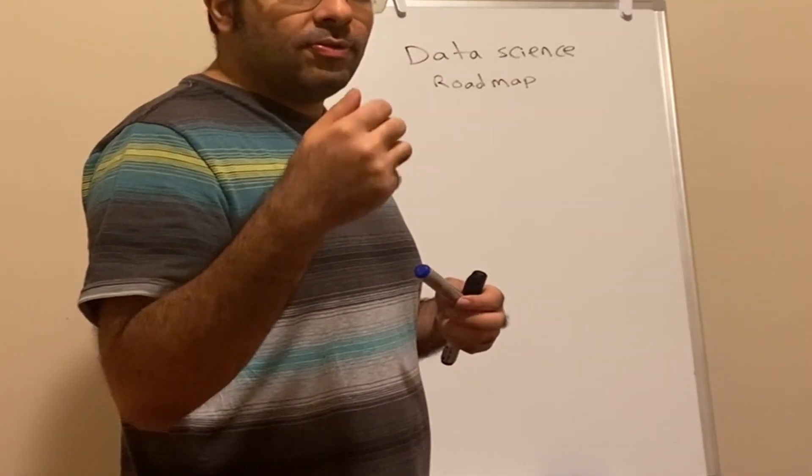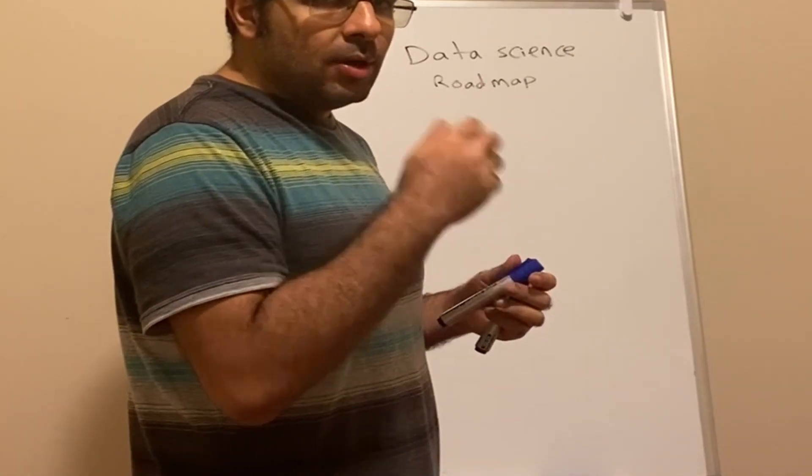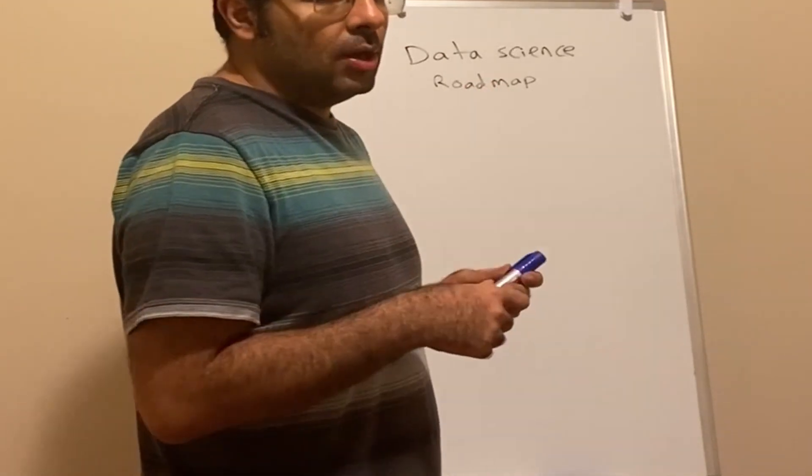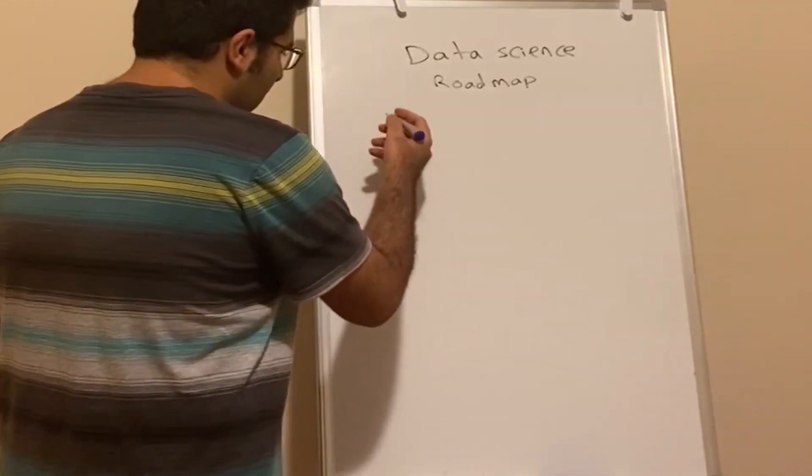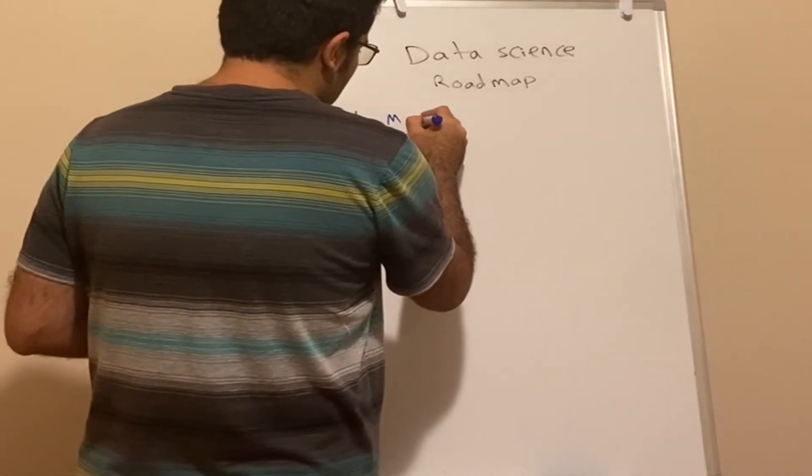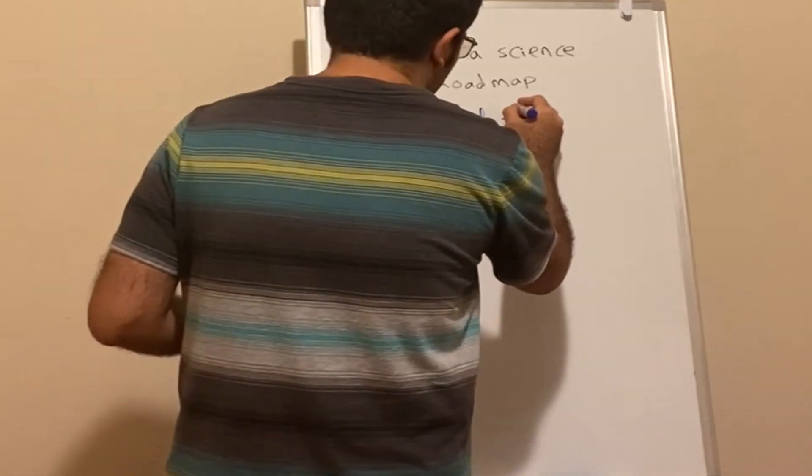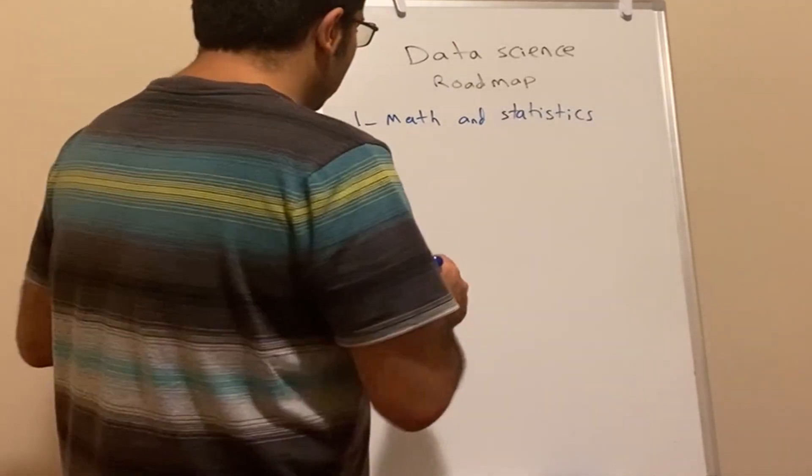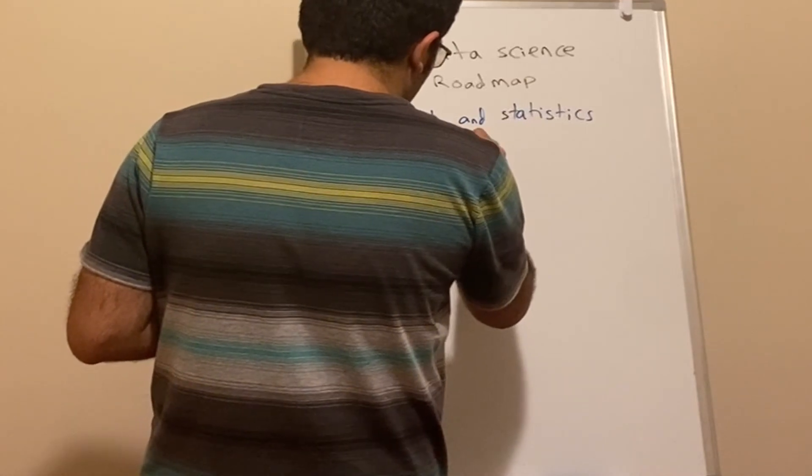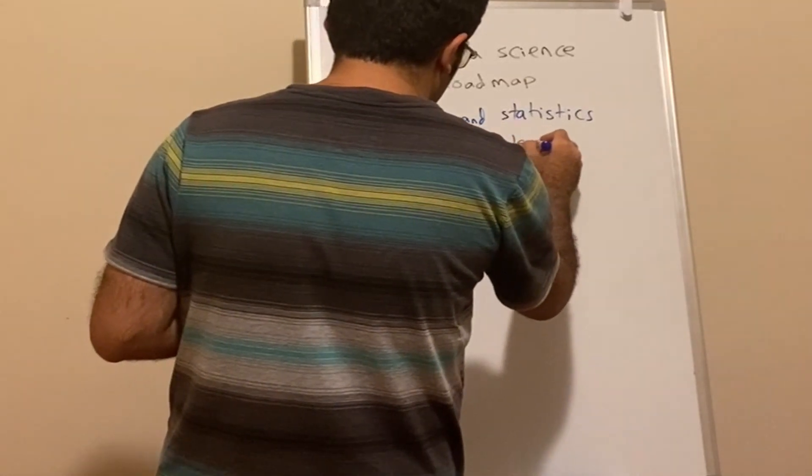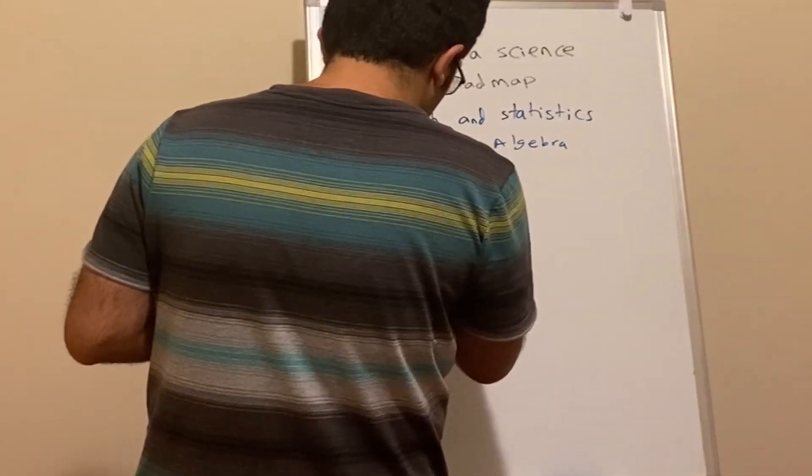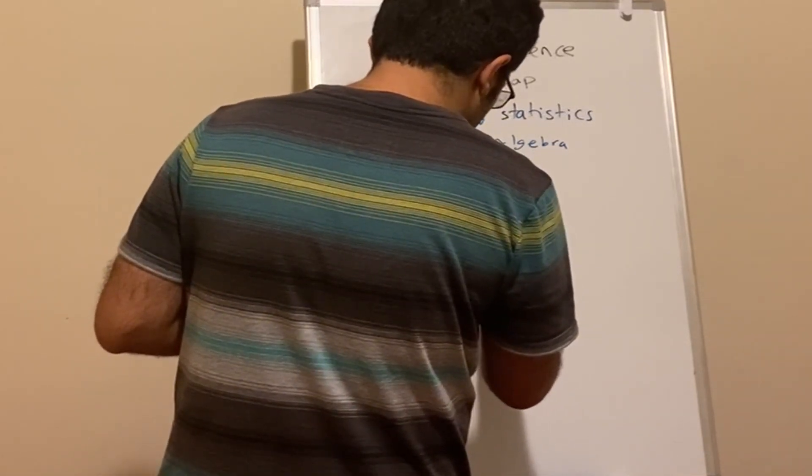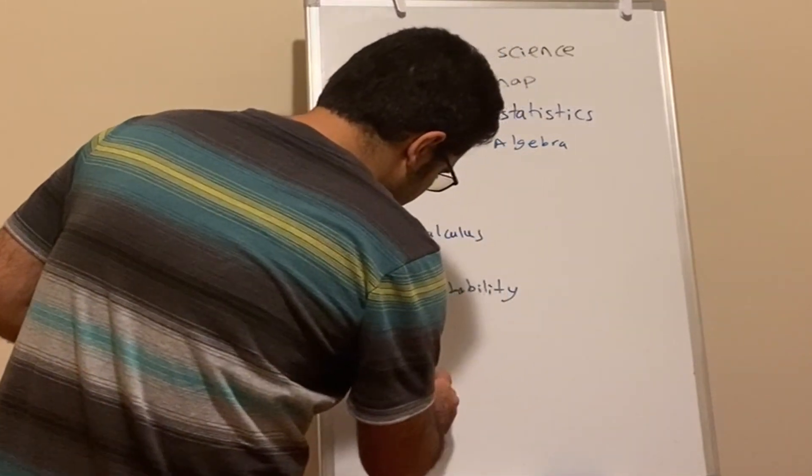Consider the data science ecosystem - from the first step to the last step, what are the skill sets and concepts you need to know? That's the comprehensive overview of the roadmap. Number one, the most fundamental concept, is math and statistics. We need to know algebra, calculus, probability, and statistics.